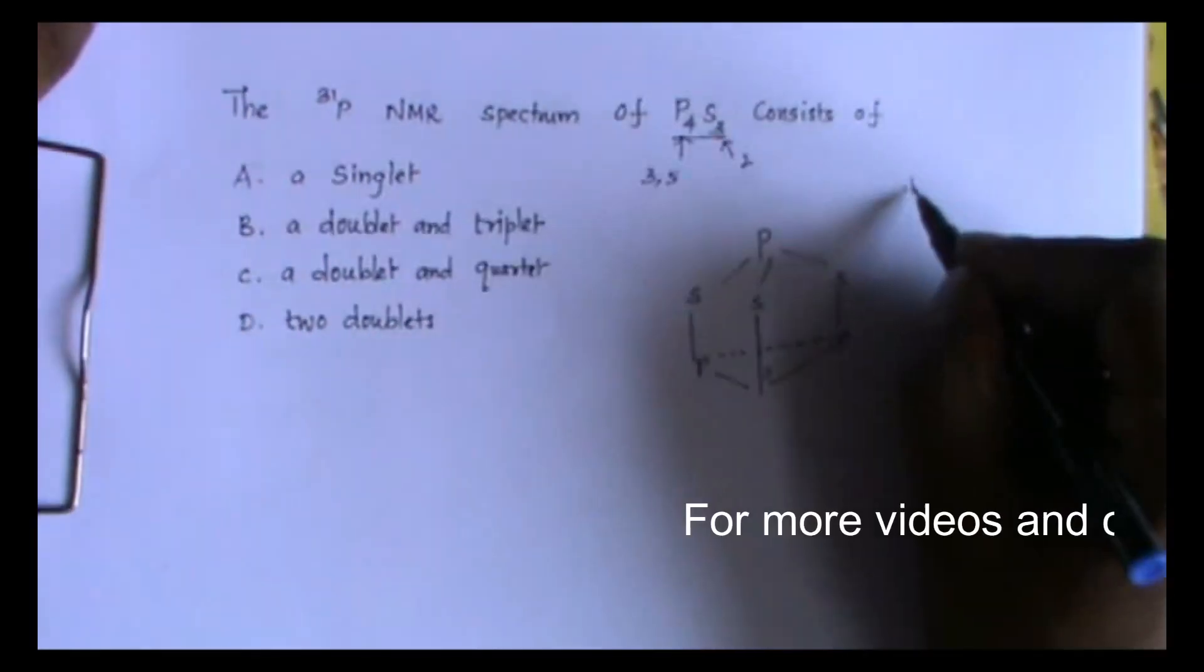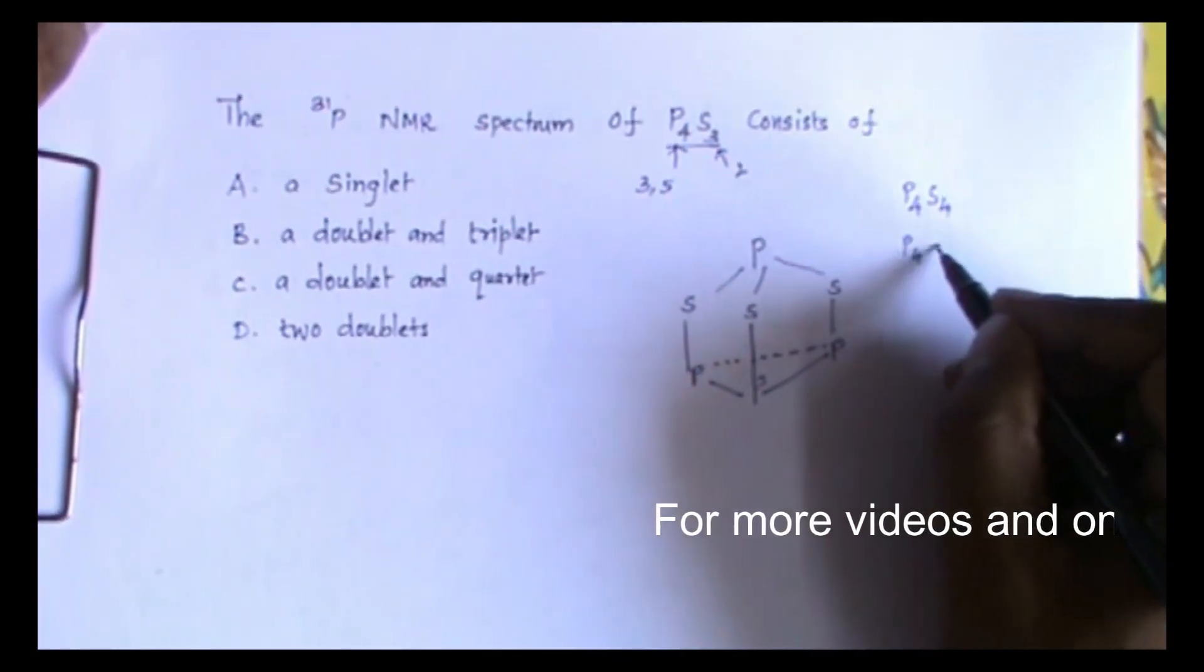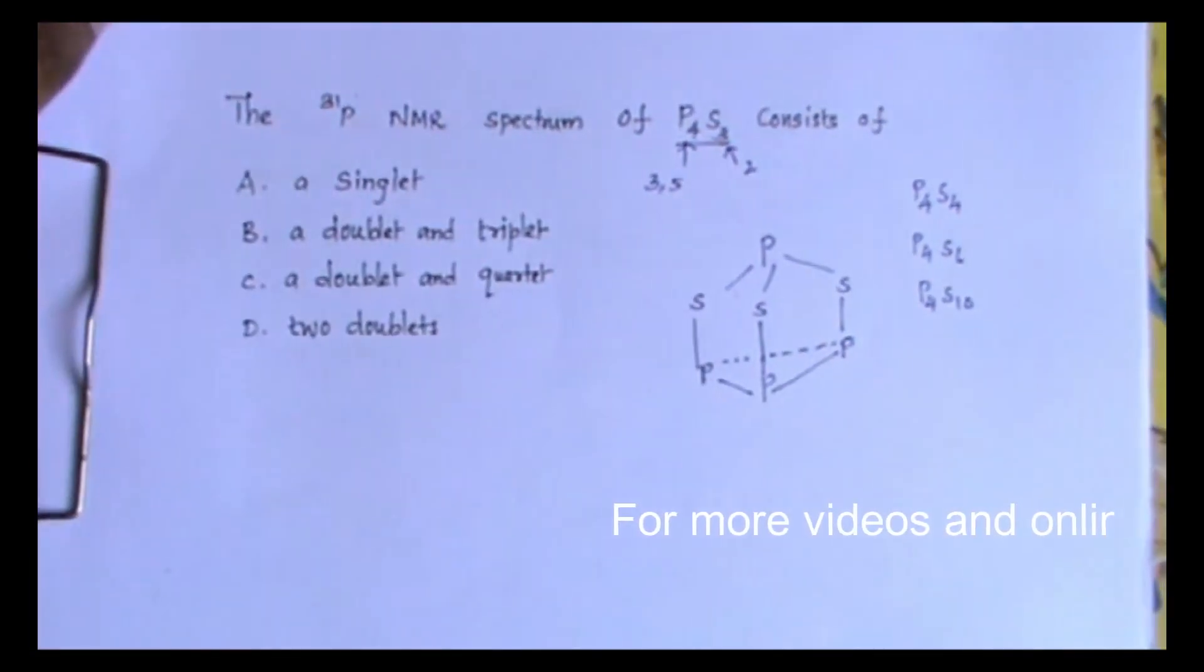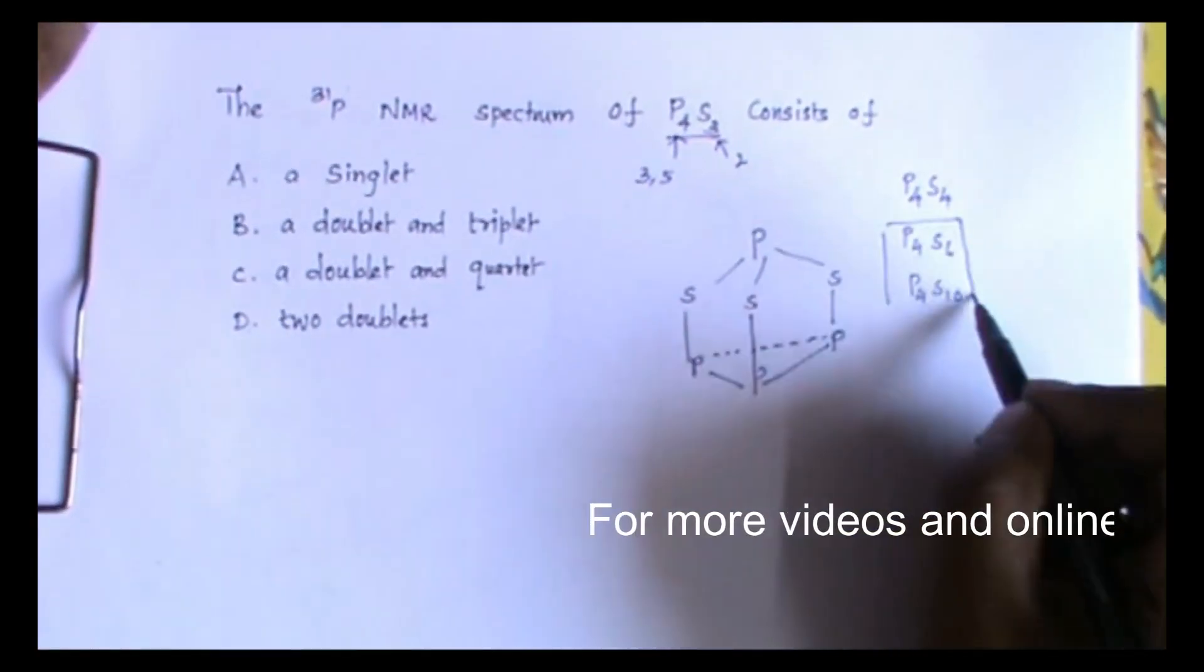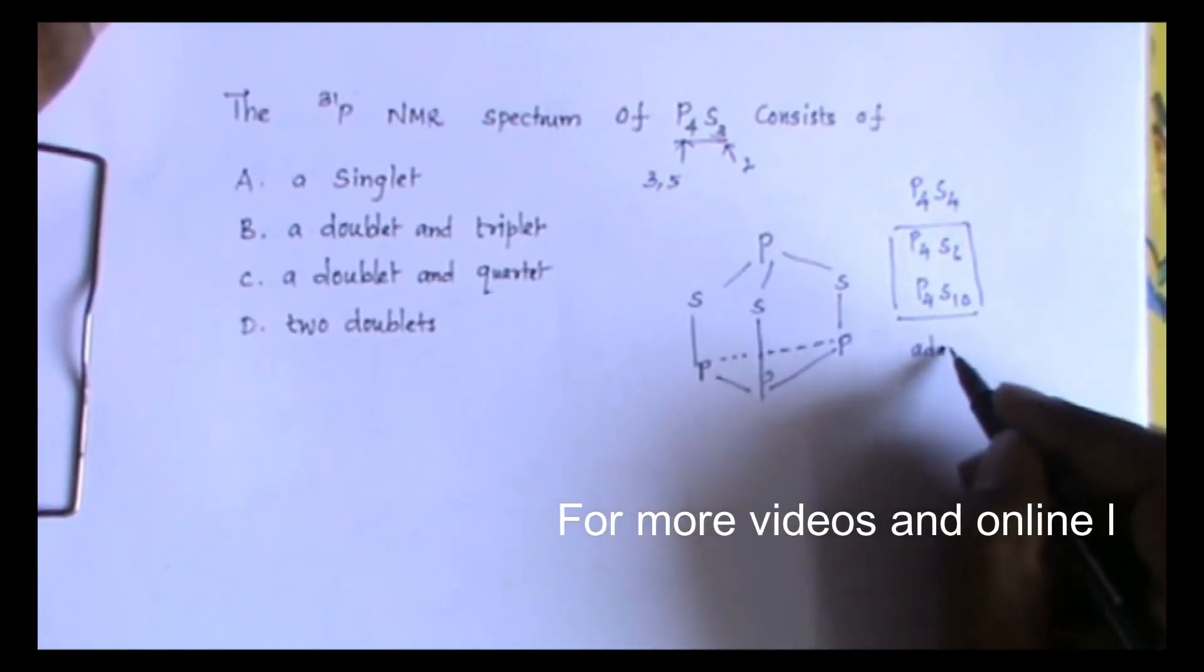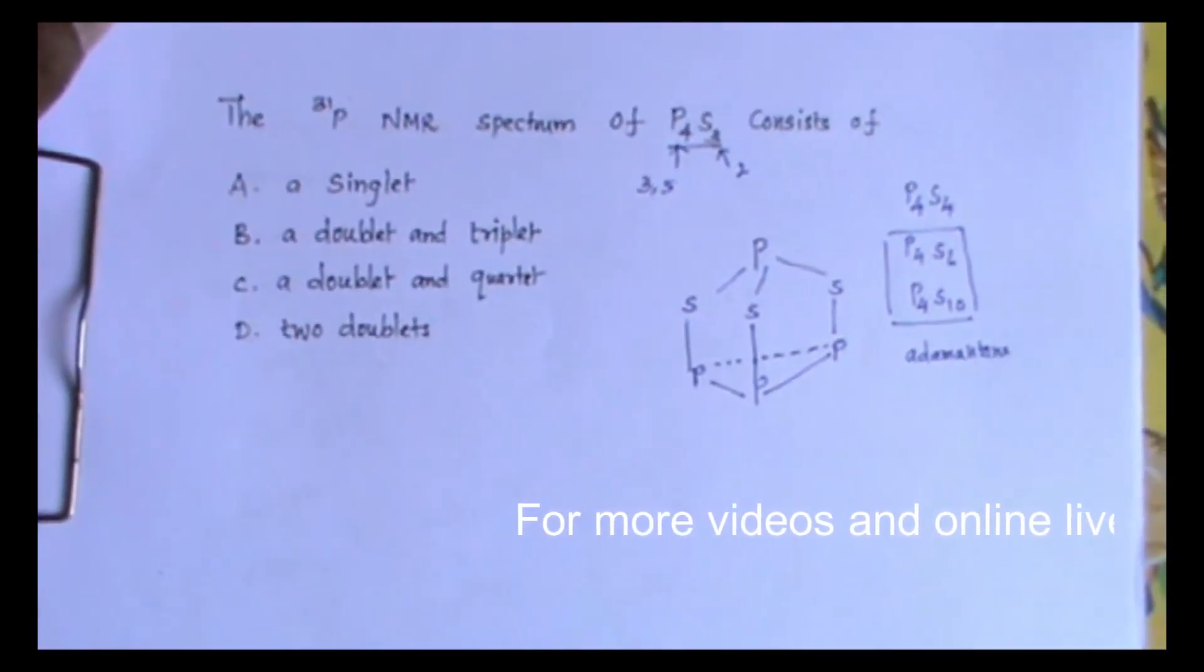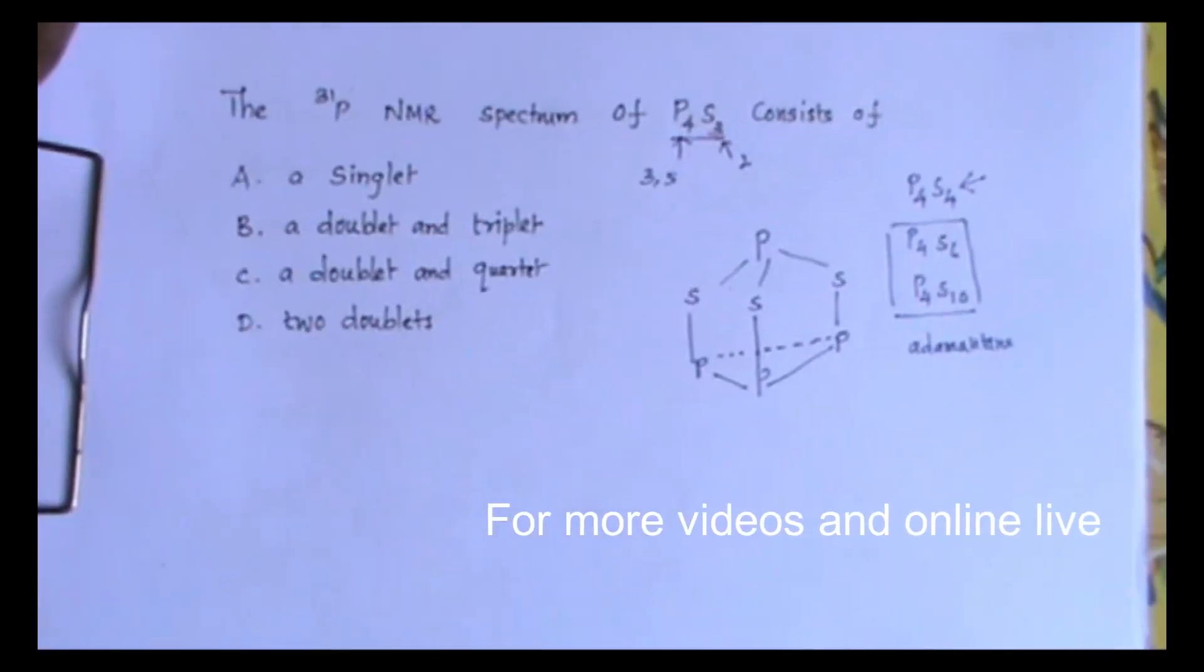We have P4S4, P4S6, P4S10 also. Find out the structure of these compounds. These two compounds will have similar structure to that of adamantane. It is an organic molecule. Check the structure of adamantane. These two will have similar structure to adamantane.